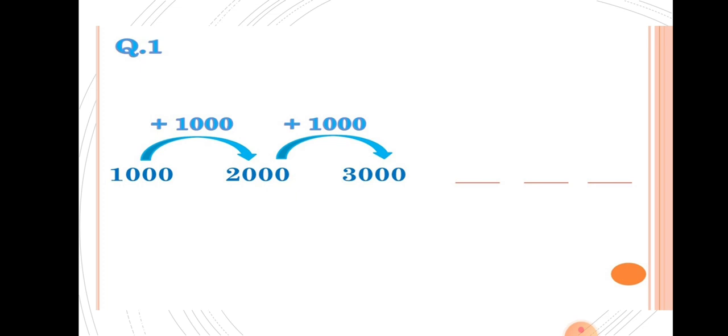How to find the difference, students? We have to subtract the second number minus the first number. Here, 2000 minus 1000, we get 1000. Third number minus second number: 3000 minus 2000, we get 1000. That is the difference. So students, we have to add 1000 to get the next number.